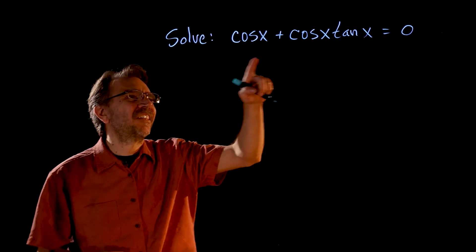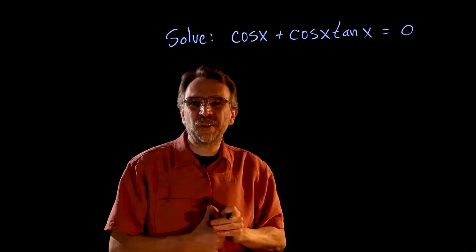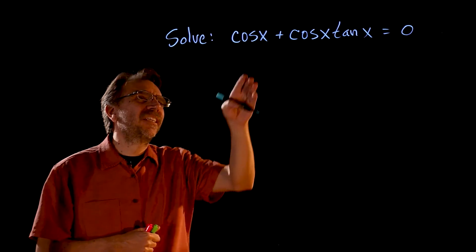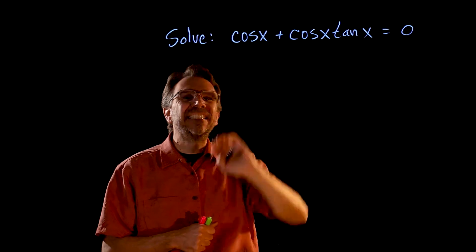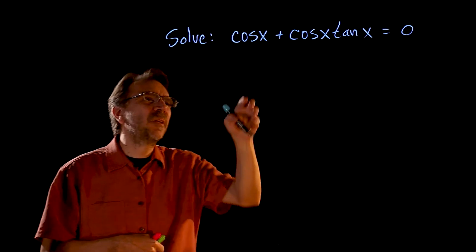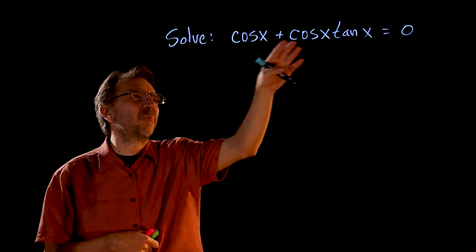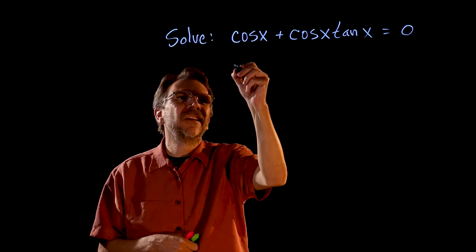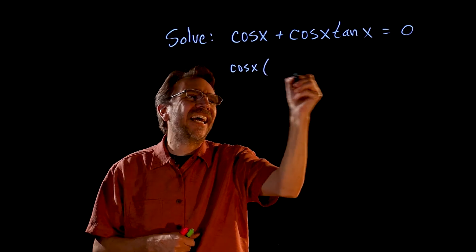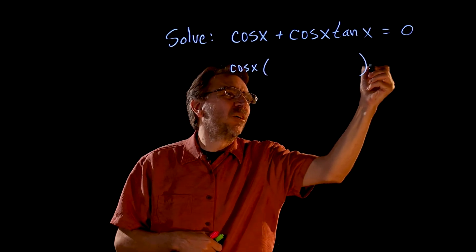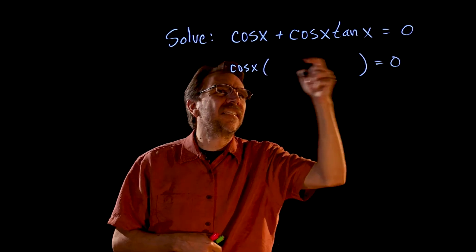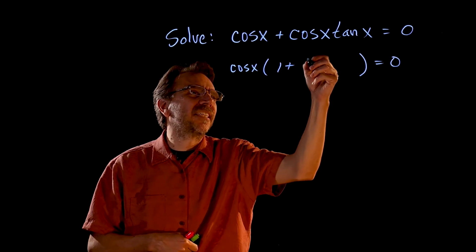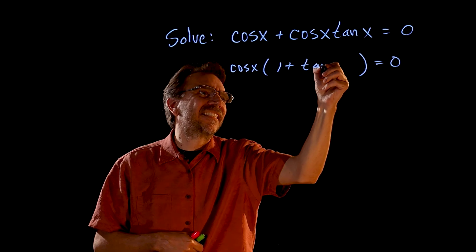All right, here we're trying to solve another trigonometric equation. Now this one has a GCF. So let's begin by noticing that both these terms have a cosine. So if we factor out that cosine x, what will be left is 1 plus tangent x.